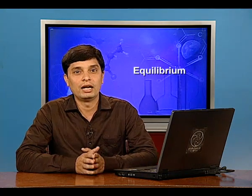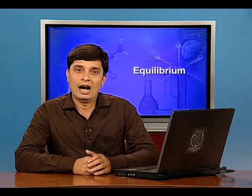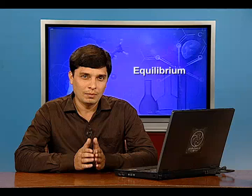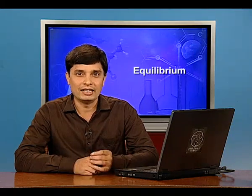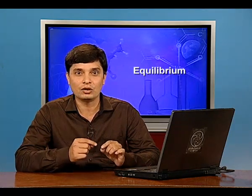The second physical equilibrium is liquid-vapor equilibrium. This can be understood using the example of a transparent box carrying a U-tube manometer. A drying agent like anhydrous CaCl₂ or P₂O₅ is placed in the box for a few hours. After removing the drying agent by tilting the box, a watch glass containing water is quickly placed inside. It is observed that the mercury level in the right limb of the manometer slowly increases and finally attains a constant value.